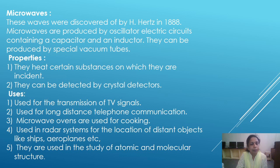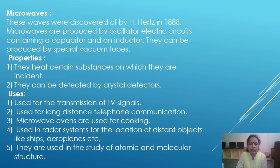Uses of microwaves: First, microwaves are used for the transmission of TV signals. Second, they are used for long-distance telephone communication. Third, microwave ovens are used for cooking. Fourth, they are used in radar systems for the location of distant objects like ships and aeroplanes. Fifth, they are used in the study of atomic and molecular structure.